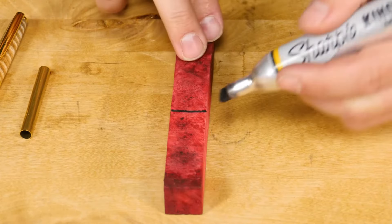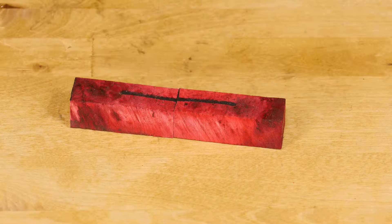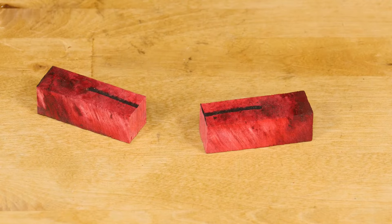Mark the blank with a perpendicular line to help keep track of grain alignment. This will come in handy later. Cut the blank on your marks with your preferred method.